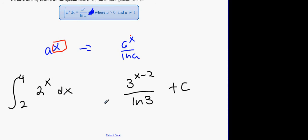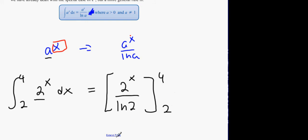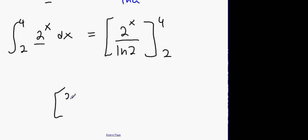Now look at this one. In this scenario, what we're doing is this. We're saying a is 2. So it's going to be 2 to the power of x, all divided by ln of the base number. And then, what do we have to do here? We have to do 4 and 2. So we're going to get 2 to the power of 4 all over ln 2. And then we're going to get minus 2 to the power of 2 all over ln 2.